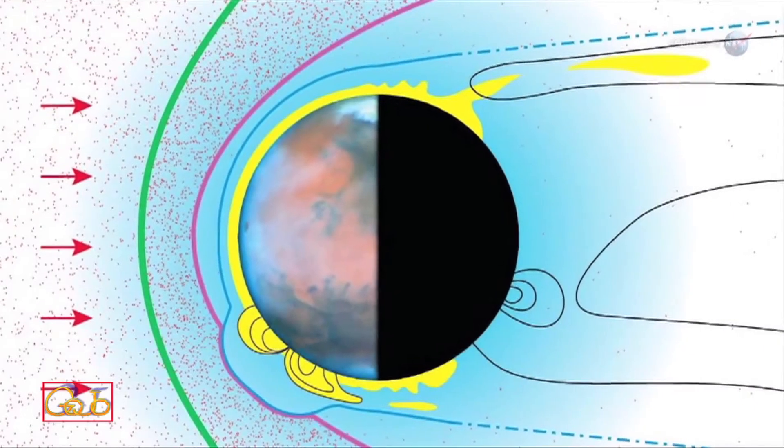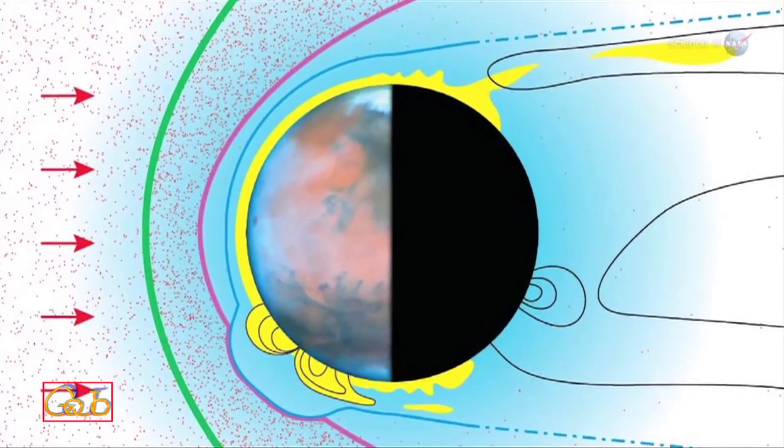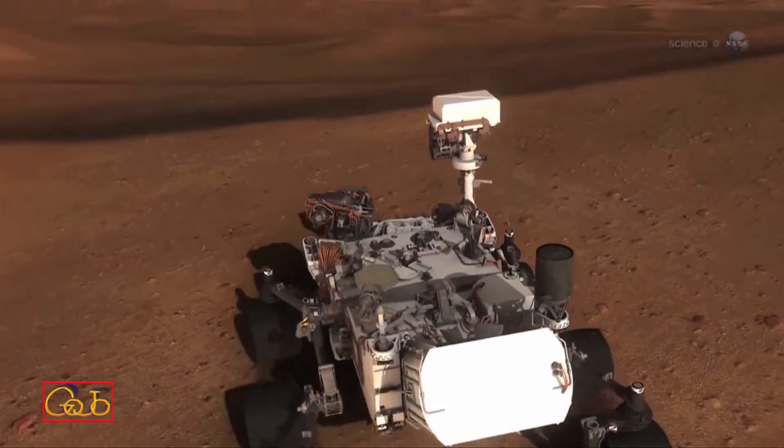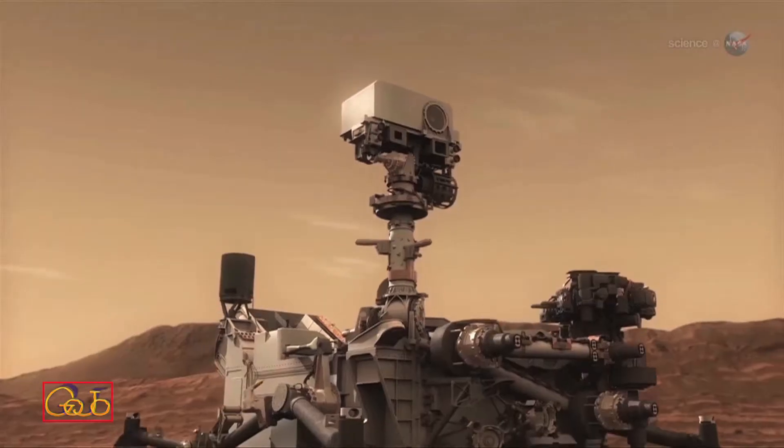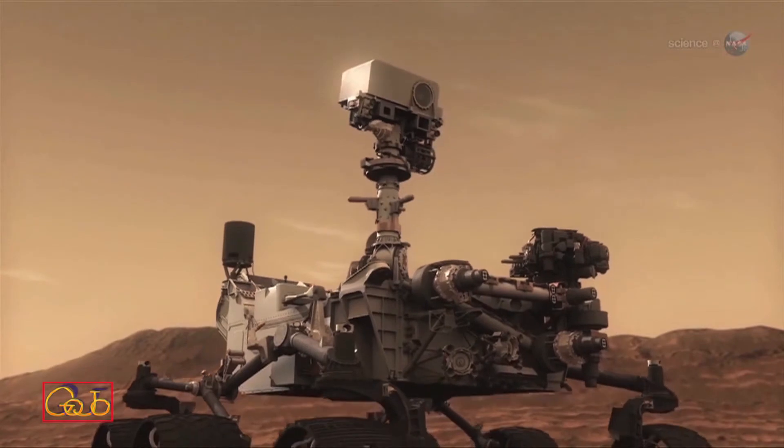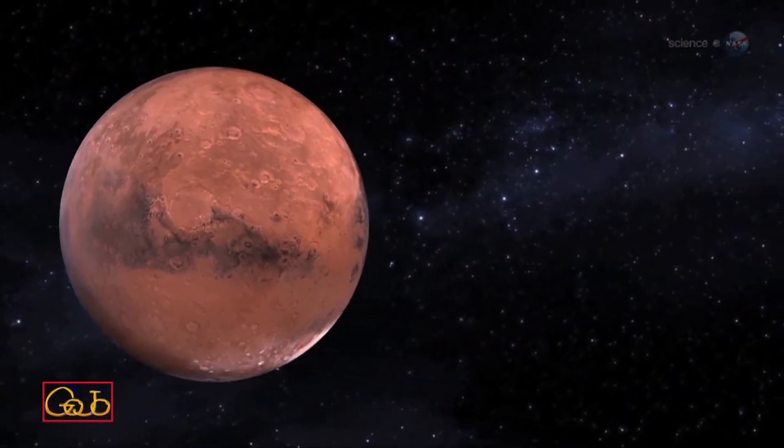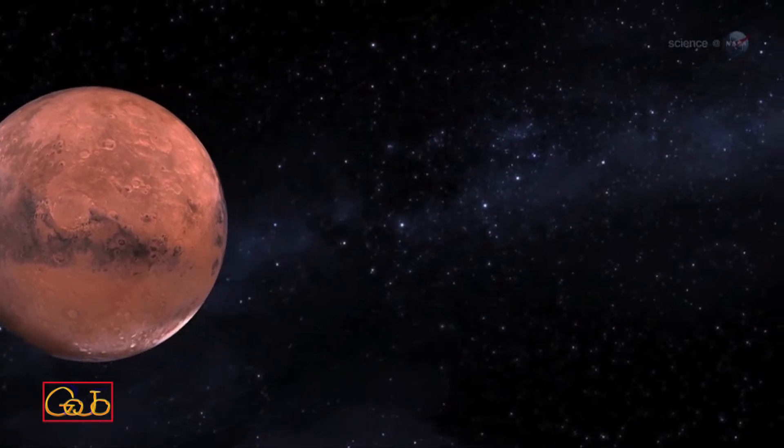Erosion of exposed areas by solar wind might have slowly stripped the atmosphere away over billions of years. Recent measurements of isotopes in the Martian atmosphere by the Mars rover Curiosity support this idea. Light isotopes of hydrogen and argon are depleted compared to their heavier counterparts, suggesting that they have been lost to space.